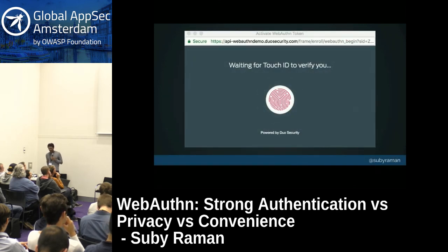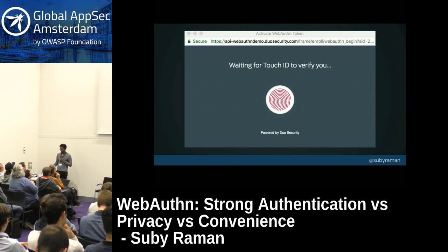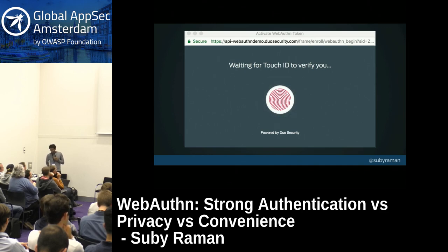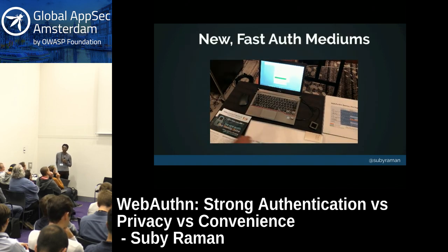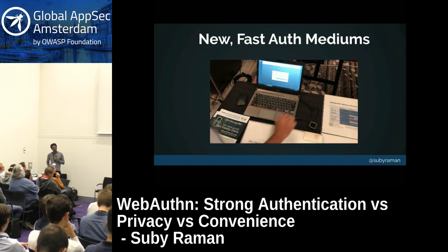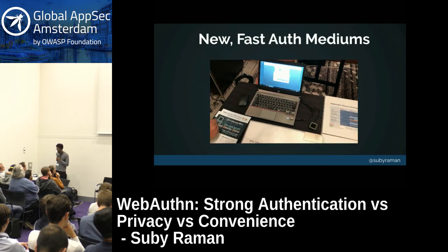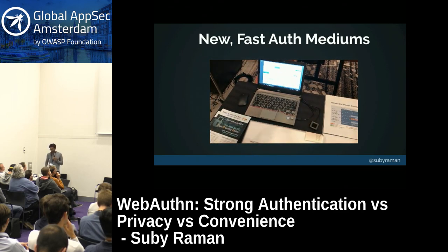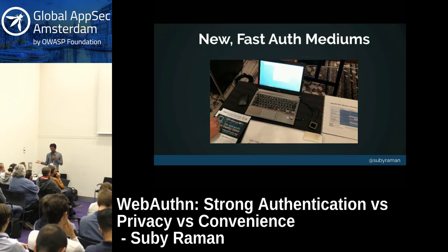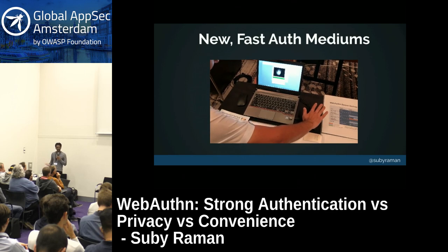A major perk of WebAuthn is that it integrates with authenticators now built into devices — many of you have iPhones or Surface Books with Windows Hello. Securely generating and storing key pairs used to be a task we'd never ask users to do, but modern hardware makes this more possible. WebAuthn also enables new and interesting user interaction possibilities, like a demo from Fujitsu where a user quickly waves their hand over a palm reader to log in. All of these UX possibilities are now enabled for authentication via a consistent API.